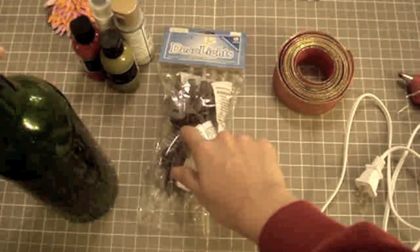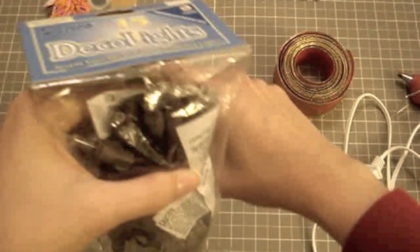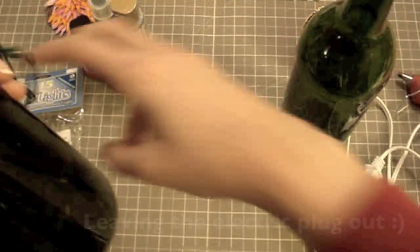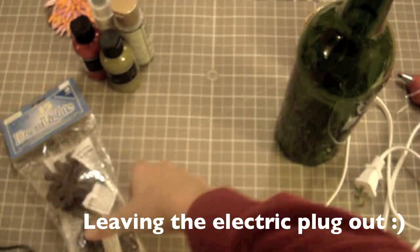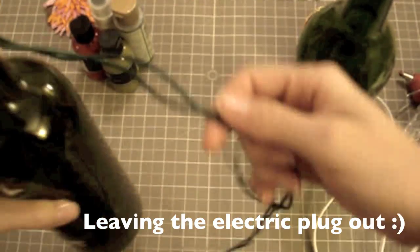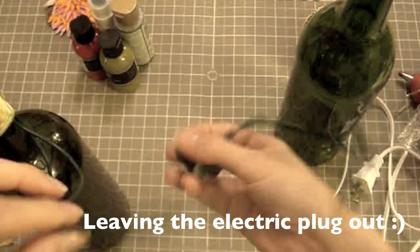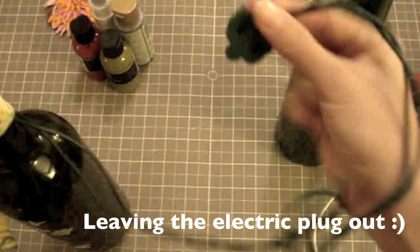Once you do that, you get your lights and you string them in the bottle. You string them in the bottle leaving the outlet obviously out because you're going to need to plug it in so it lights up.